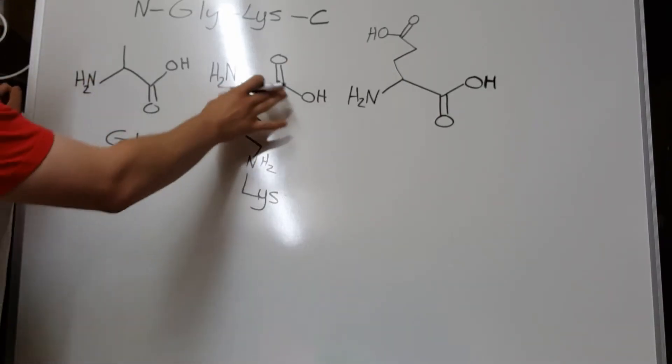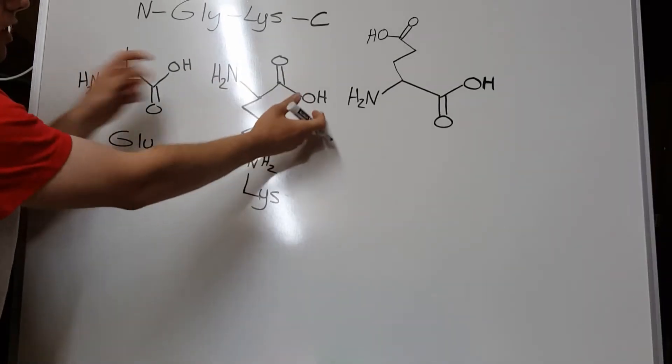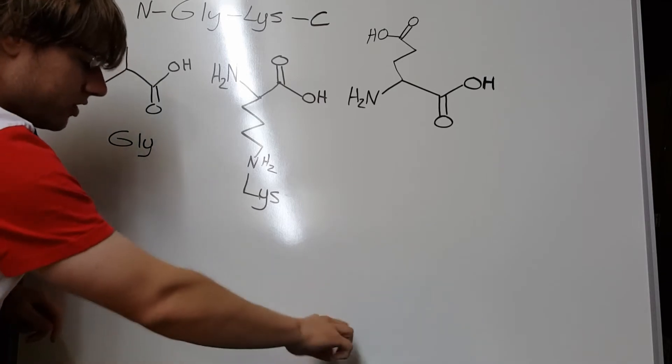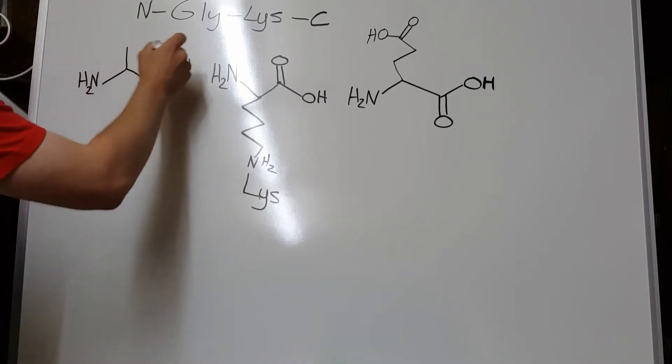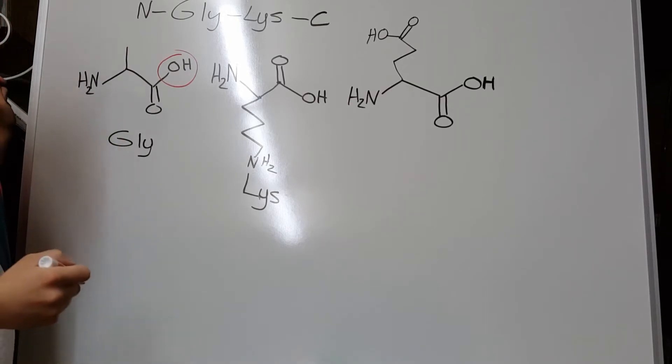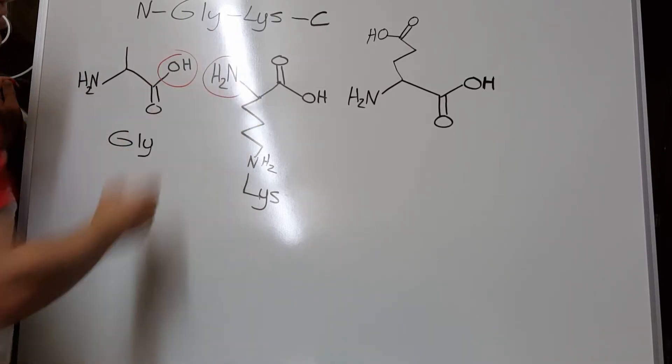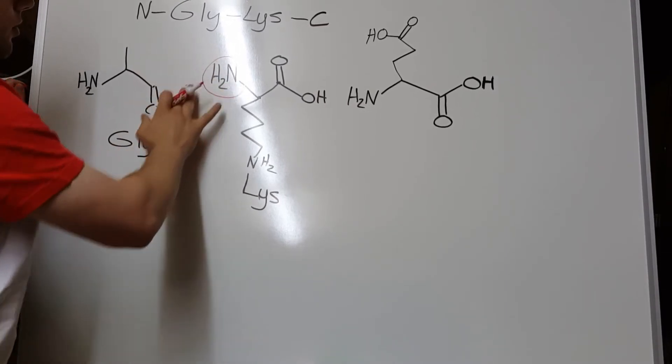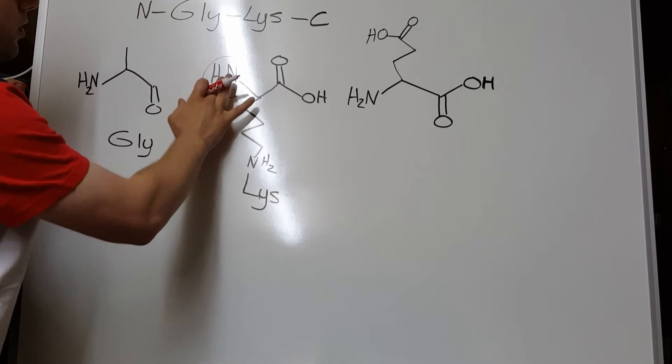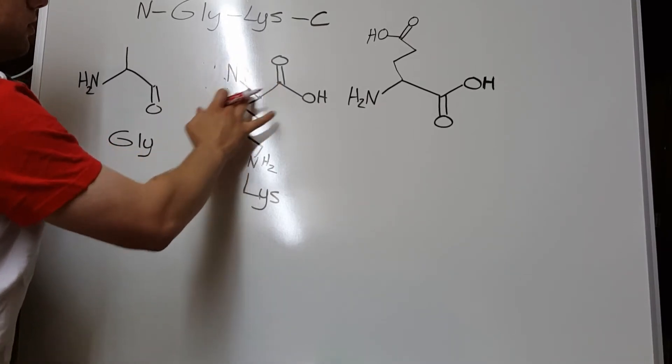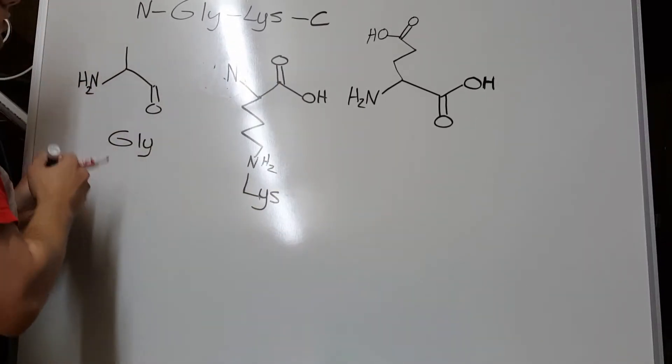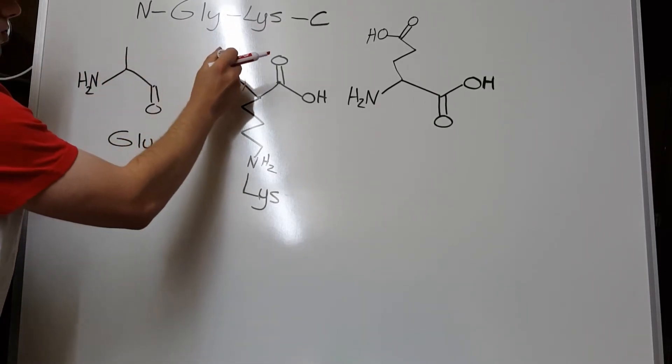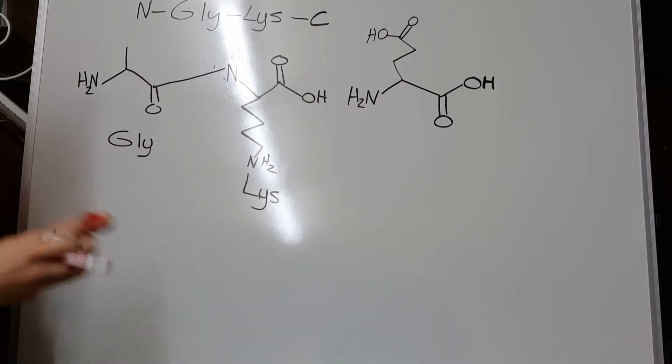But if it's an exam question and they give it to you the other way around, you might have to take the molecule and just flip it. Now, what you're going to do to figure out what this looks like is pretty straightforward. You're going to find the OH group of your carboxy end that you want to fuse, and you're going to find your NH2 group. You're going to completely erase that OH group from your carboxy end. You're going to remove one hydrogen from the amino end. And then you're just going to connect the nitrogen to that carboxy-terminus. And there you have a peptide bond.